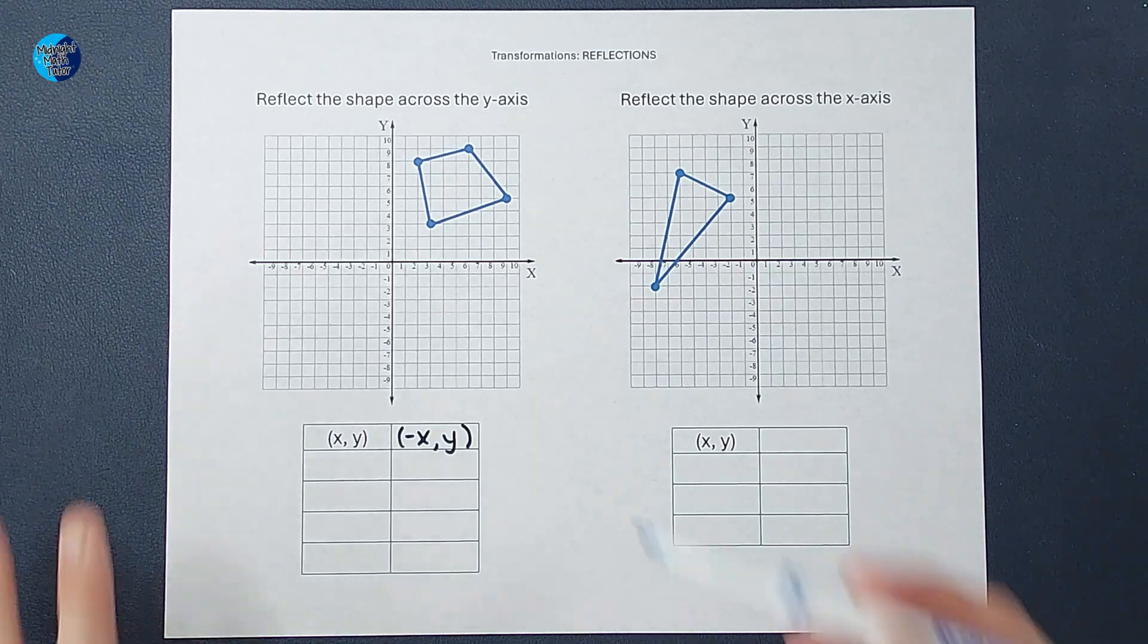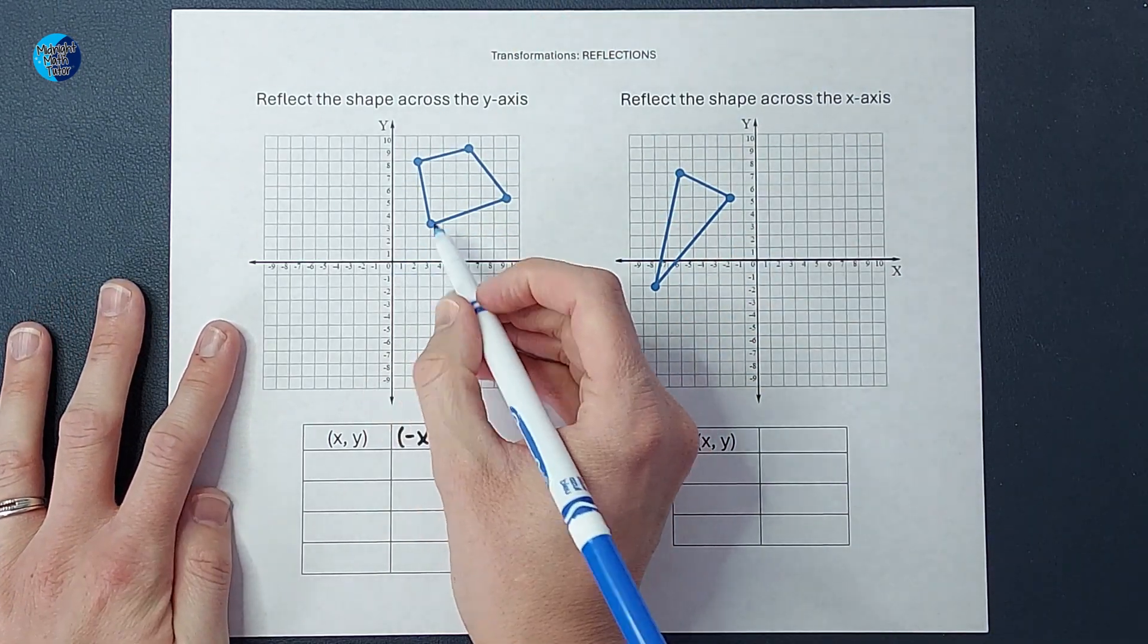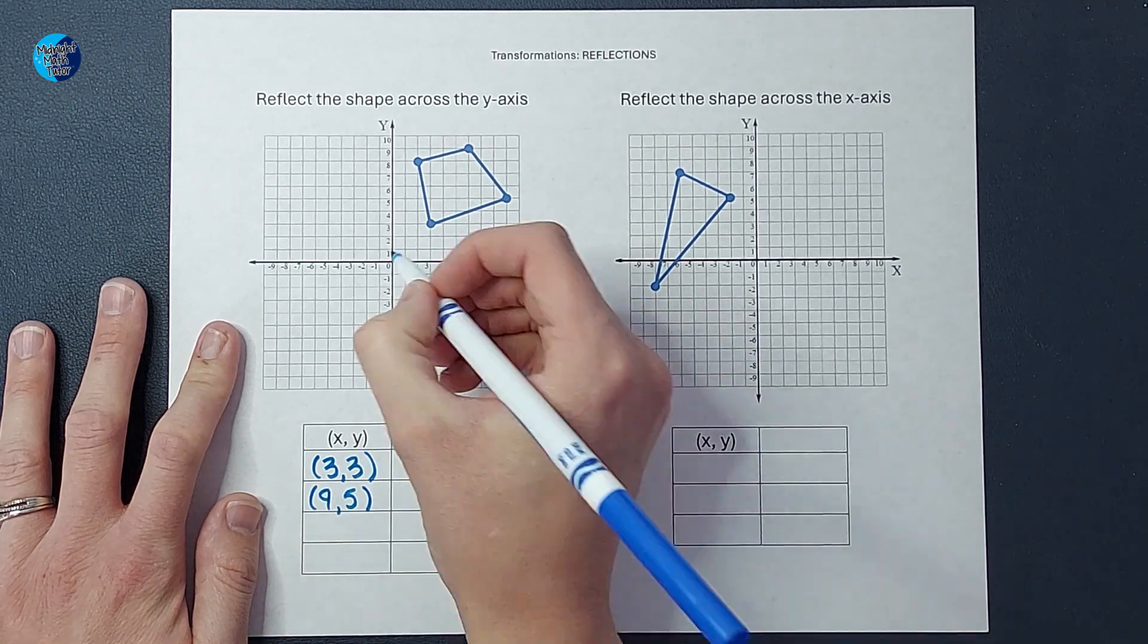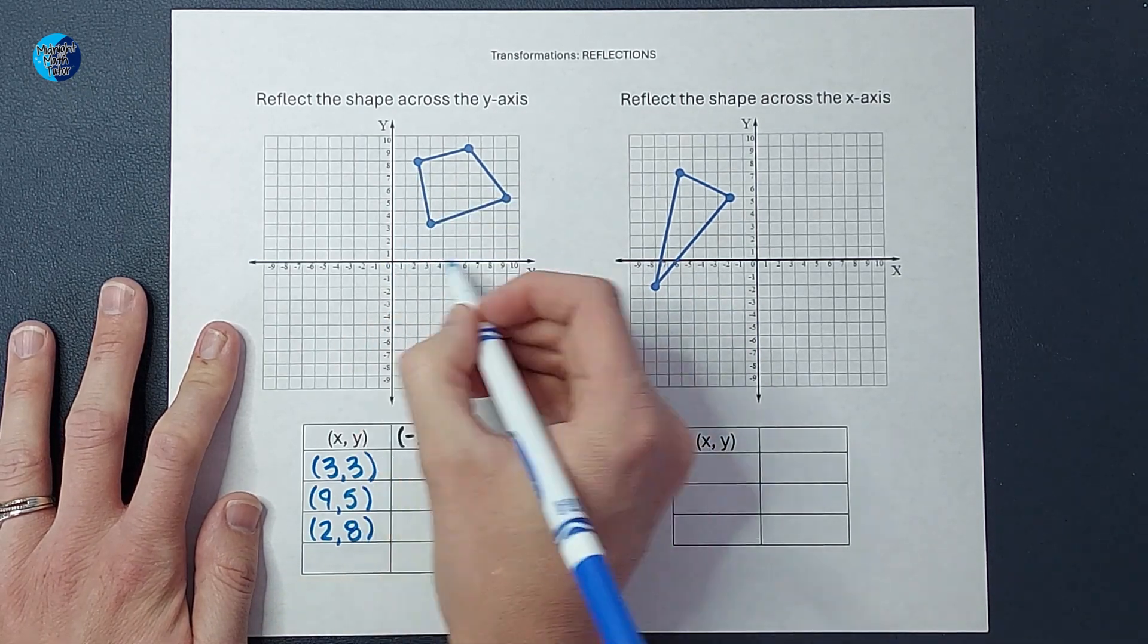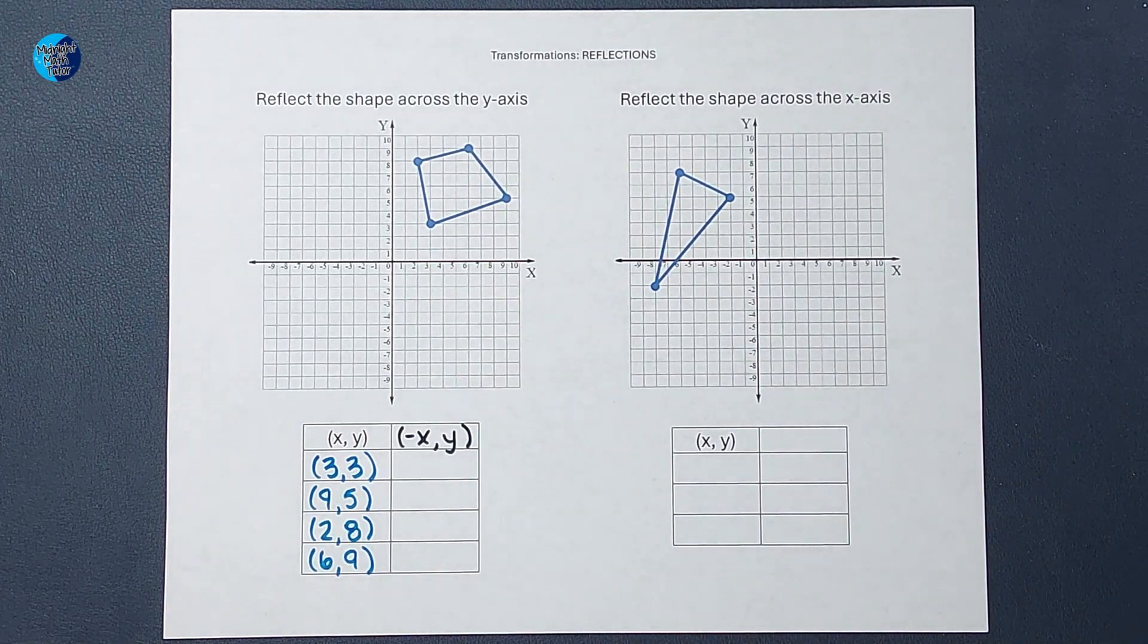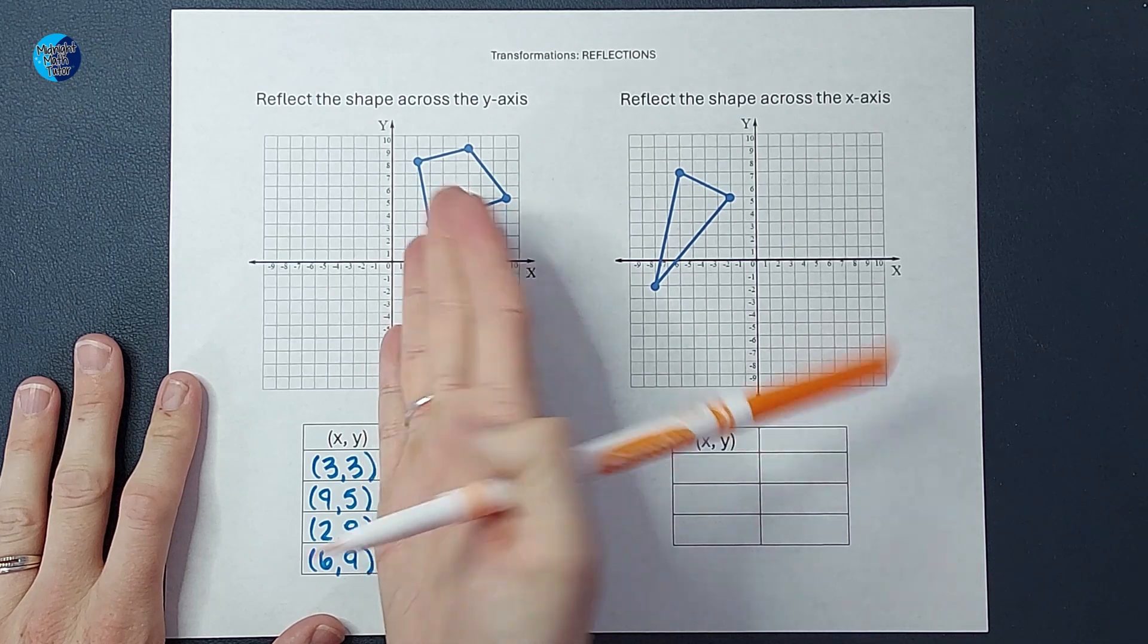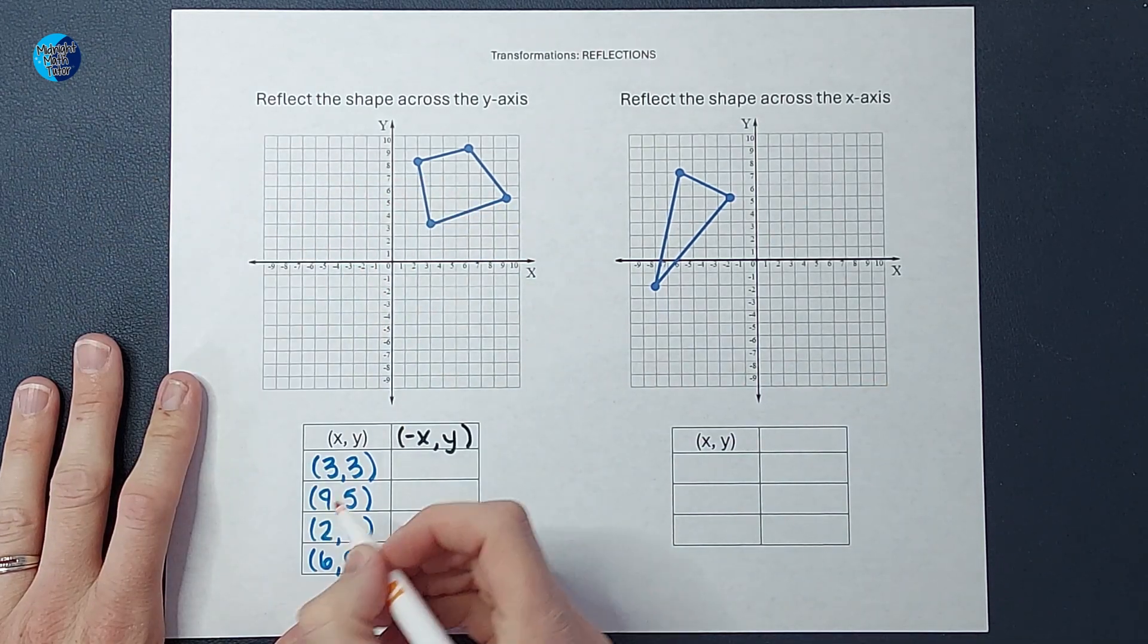So I am going to figure out all of these ordered pairs first. Okay, so there are my points for this original shape. Now I am just going to change x's sign to reflect it across the y-axis.